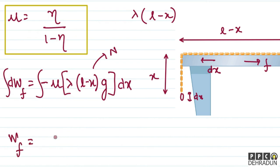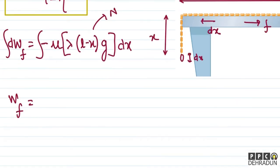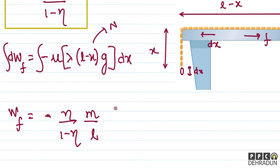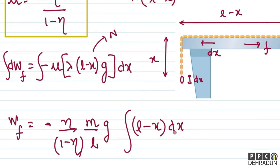Work done by friction को integrate करेंगे। यहाँ पर minus बाहर आ जाएगा और mu की value रखेंगे eta/(1 - eta)। lambda = m/L है और g भी constant है। Integration के अंदर आ गया (L - x) dx। अब x की limit: शुरुआत में x = eta×L था और finally x = L हो जाएगा क्योंकि पूरा portion overhanging हो जाएगा।